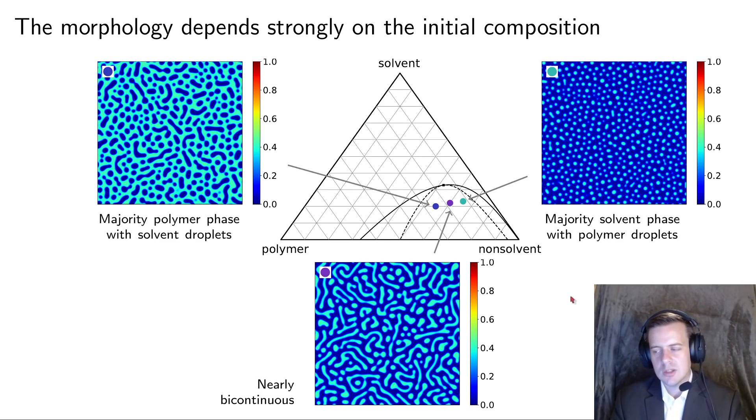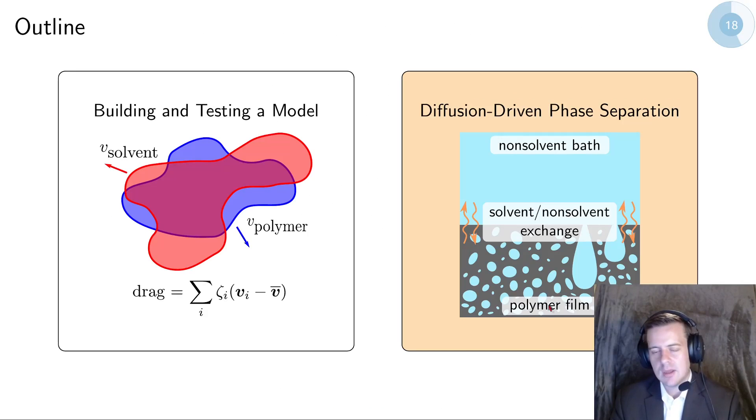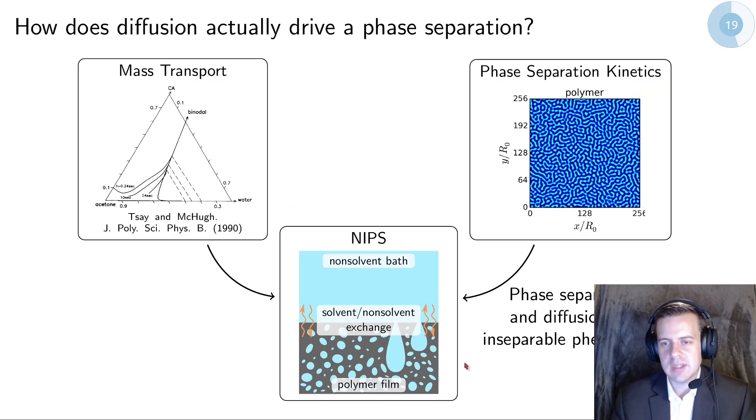I showed you this purple one here. But if I would have initiated with a smaller polymer concentration, I would have ended up with isolated polymer droplets in a large matrix of solvent. And if I would have initiated with a much larger polymer concentration, I would end up with a continuous polymer phase with just non-solvent droplets isolated in there. What I showed you was something that was nearly bicontinuous. There's this line of symmetry that goes somewhere close to where that purple point is where you get something that's exactly bicontinuous as it phase separates. Now with our remaining five or six minutes, let's talk about this problem of diffusion driven phase separation.